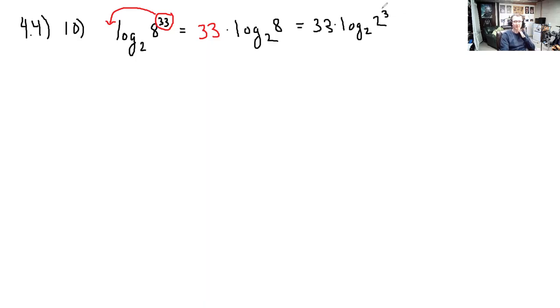We can use the same rule or the definition of log. These have the same base, 2 and 2, the exponential and the logarithm. If we evaluate log base 2 of 2 to the 3rd, this is just the power, it's just 3. So this equals 33 times 3, and 33 times 3 is 99. That is 99.